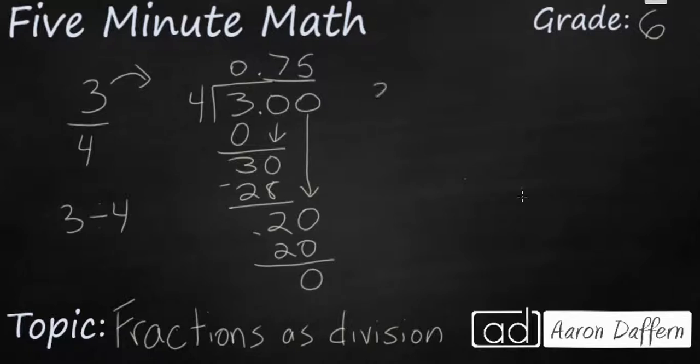So 3 quarters or 3 fourths is the same as 0.75. And think of 3 quarters of 25 cents each. 3 quarters makes 75 cents.